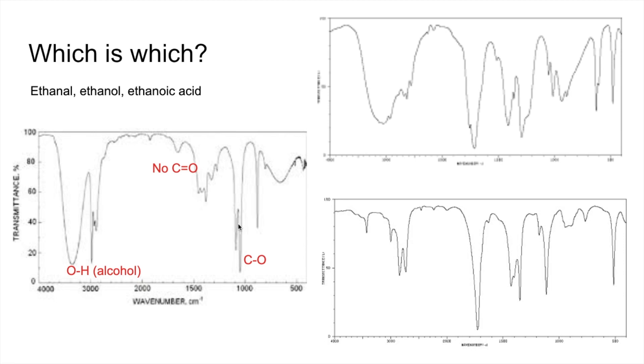If we move on to this one, so we've already commented that this is broad, so this is looking like the OH of a carboxylic acid, and what else would we expect to see in a carboxylic acid? A C double bond O, which you can clearly see, there's your strong absorption at around about 1700 centimeters to minus one. So there's your C double bond O.